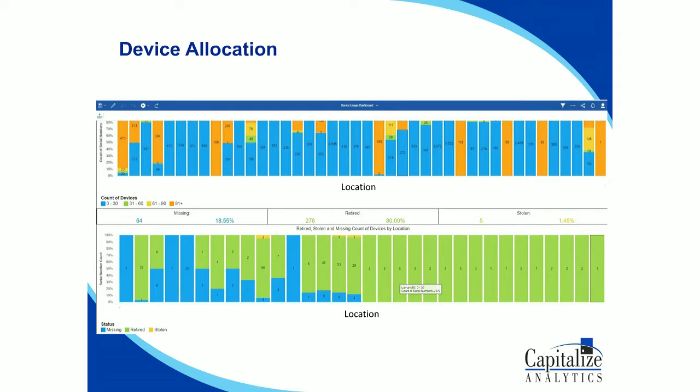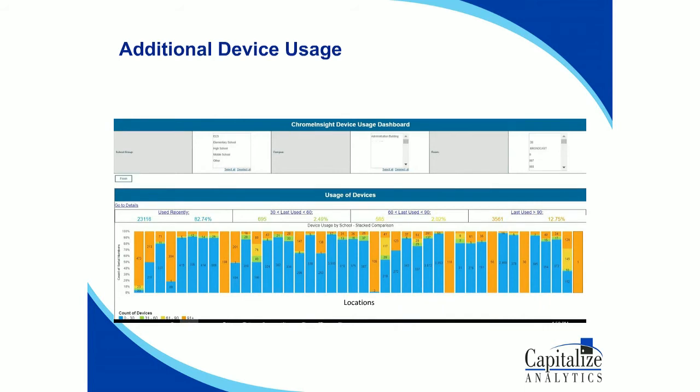The screenshots we're going to show are of actual reports for the school district — obviously we've removed any names. This first report shows by location which rooms are under- or over-utilized with actual machines, really just to help with inventory. And then we have a slightly different view of this based on individual classrooms.